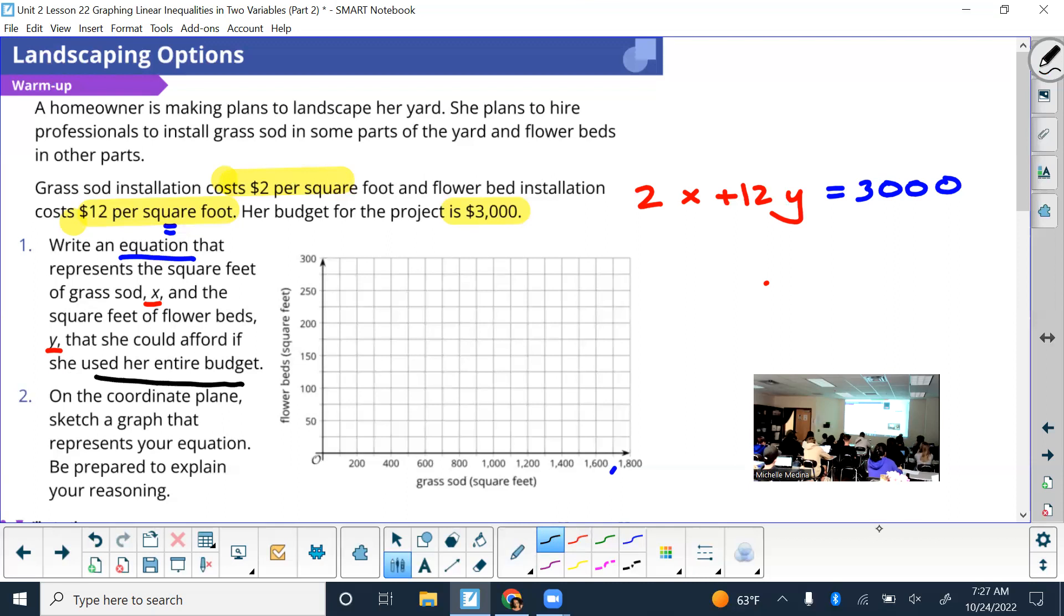Now we're going to sketch that. Now to sketch that, a little bit hard in standard form. I mean you can use Desmos, but even then you've had problems like that before and some people got them wrong. So anytime you're graphing on a coordinate plane, what form does it need to be in? Y equals mx plus b.